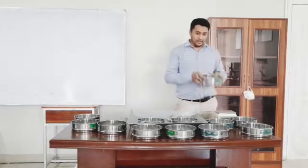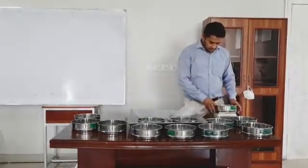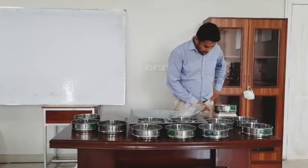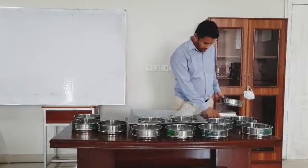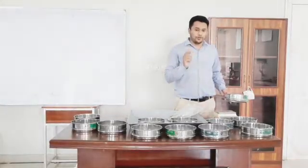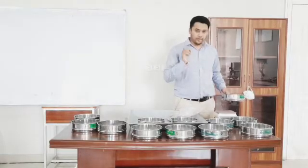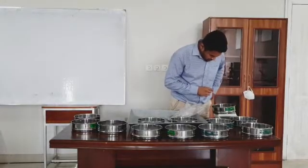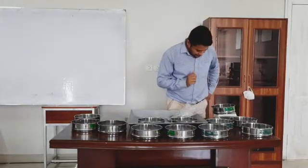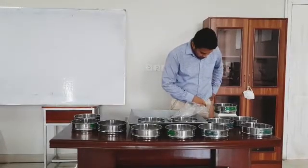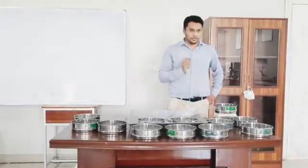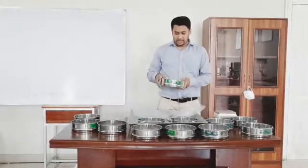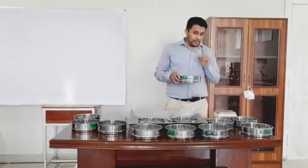First of all we will record the empty weight of sieve number 200. Place it on the balance. First calibrate your balance machine before measuring the weight — don't forget to calibrate your balance. Then measure the sieve weight. The reading is 361.8 grams. Record this weight in your notebook.